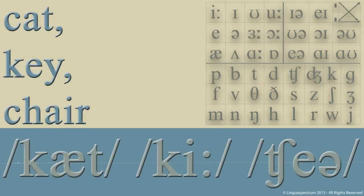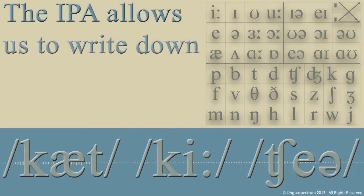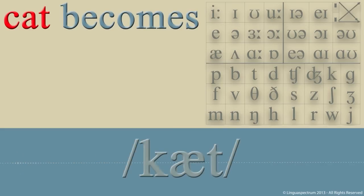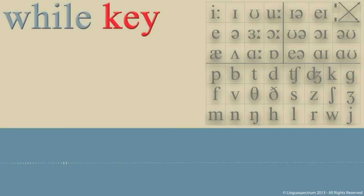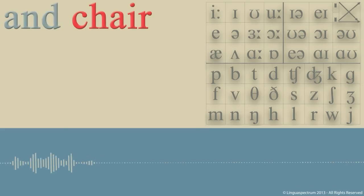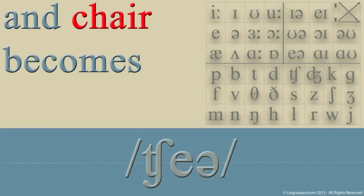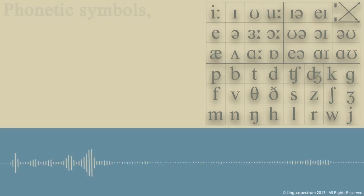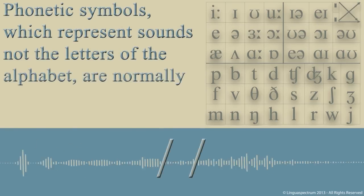The IPA allows us to write down the actual sound of the word. Cat becomes K, A, T. While key becomes K, E, key. And chair becomes Ch, A, chair.